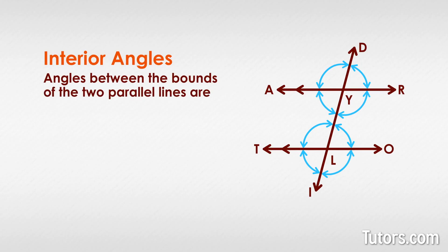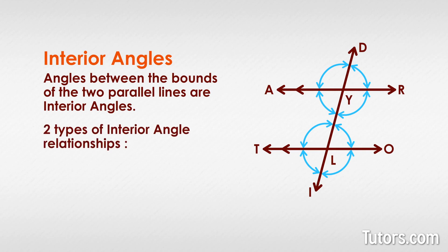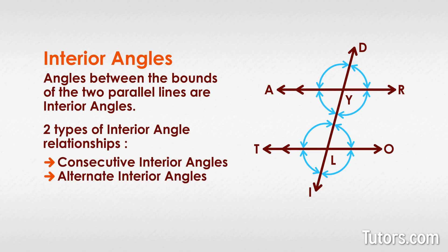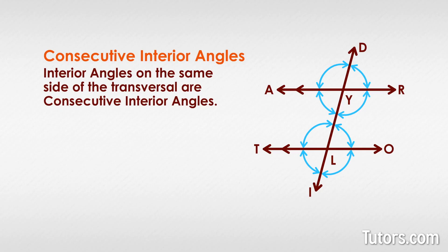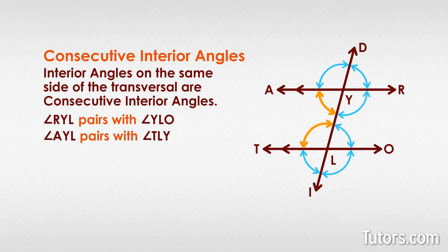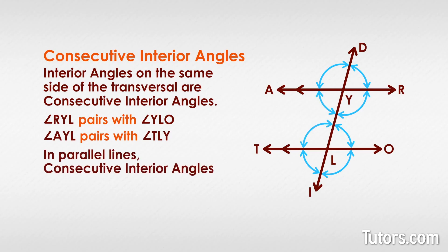Angles between the bounds of the two parallel lines are interior angles, again created by the transversal. Just as with exterior angles, we can have consecutive interior angles and alternate interior angles. Interior angles on the same side of the transversal are consecutive interior angles. In our figure, angle R-Y-L pairs with angle Y-L-O, and angle A-Y-L pairs with angle T-L-Y. In parallel lines, consecutive interior angles are supplementary.